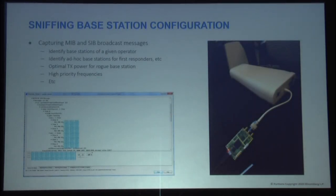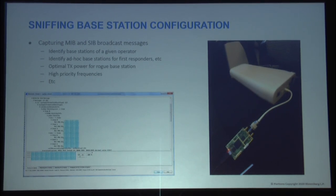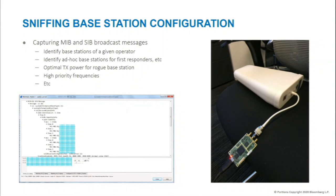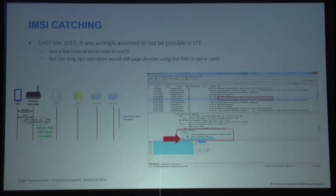Things that can be done: you can intercept broadcast messages that towers are transmitting. These allow you to identify base stations that belong to a given operator, identify ad-hoc deployments for first responders, and give you an idea of what transmitted power to set up for your rogue base station to maximize connections. High-priority frequencies — something the team in Berlin discovered — let you set up a rogue base station very optimally because everybody wants to connect to those frequencies. IMSI catching was generally thought not to be possible on LTE until late 2015, but it actually was, and as of today just a couple lines of code on SRS LTE let you catch IMSIs very easily.